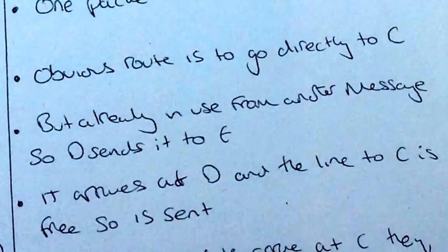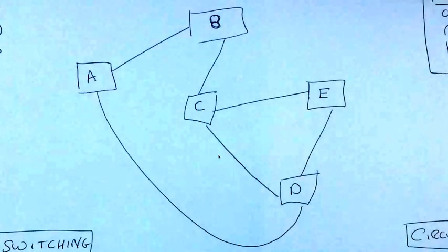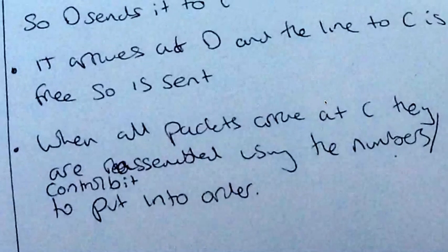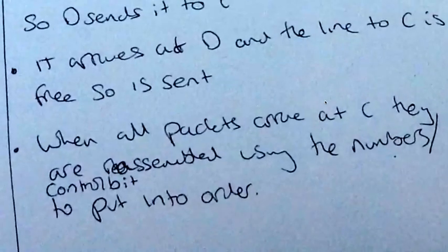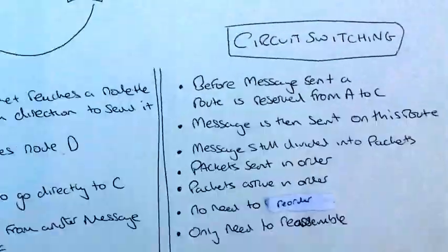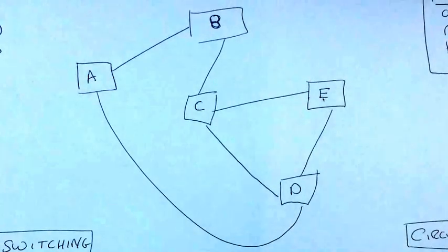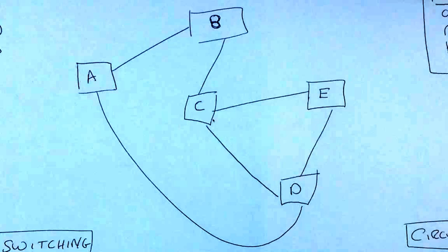But if it's already in use from another message, D will send it to E instead. So if we cannot use this for some reason because it's already in use from another message or it could be down or whatever, D will have to send it to E instead. So the packet could go to E instead. It arrives at E and the line is free. So it will then send it. If the packet arrived at D and this line was free, then it might send it directly to C. But if the line was busy, it would go to E and then via E to C.